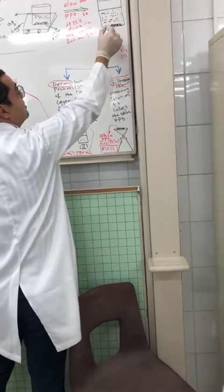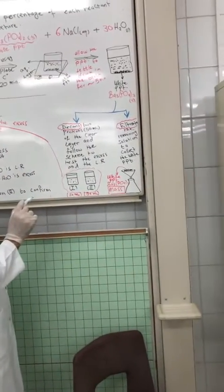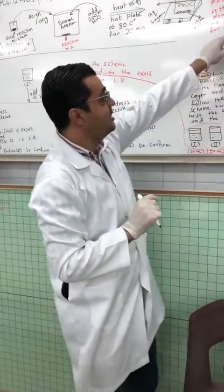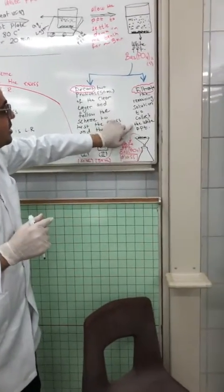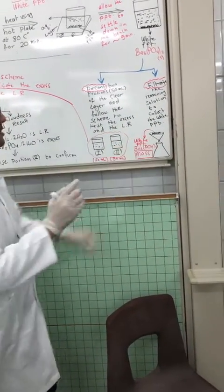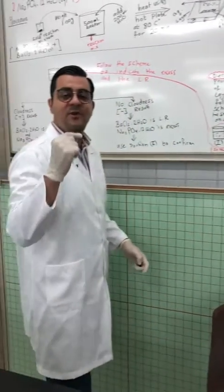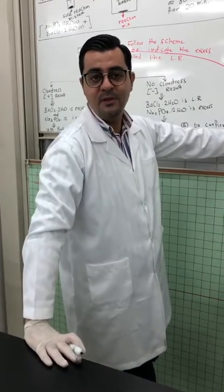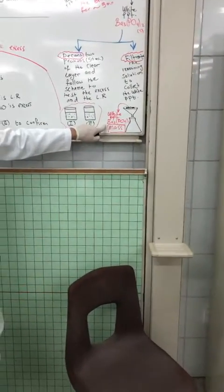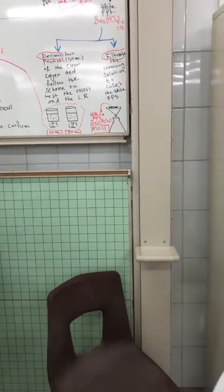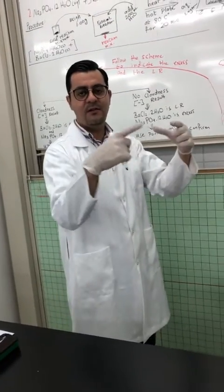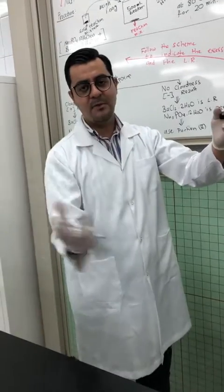The second step is filtration. After decanting two portions, the precipitate and some water are still in the original beaker. We will filtrate the remaining mixture to collect the white precipitate of the product. The mass of the white precipitate is fundamental to carry out our procedure. To record it correctly, weigh the empty filter paper, carry out the filtration, wait until the filter paper is dry, then re-weigh it with the precipitate and subtract the mass of the empty filter paper to get the mass of the precipitate accurately.